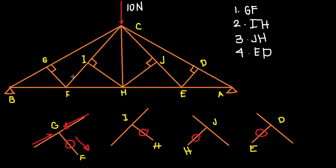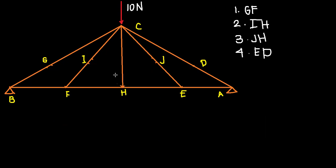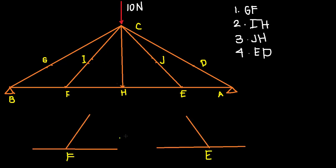Since those are zero force members, we can actually remove them from the figure — nothing would change because they carry no internal force. With those four zero force members eliminated, we now have a simpler figure. Applying the same principles again at joints F and E, we again see two collinear members and one non-collinear member at each.